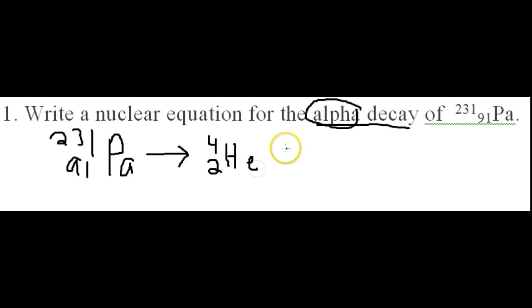Then I ask how will we figure out what our daughter atom is. It may take some prompting to remind them that the original element is losing the helium, so you're subtracting both top and bottom.